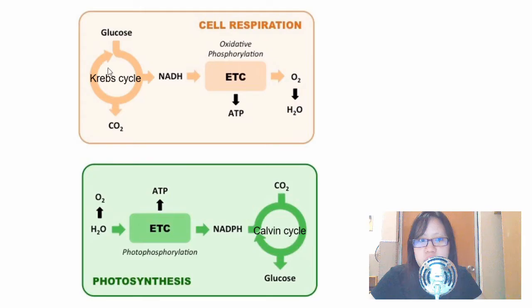We need all these reactions to produce NADH which is a hydrogen carrier to carry the hydrogen to the electron transport chain where oxidative phosphorylation occurs which produces ATP. And then oxygen being the final electron and hydrogen acceptor would form H2O. We can see here in photosynthesis that it's pretty much similar but the other way around.